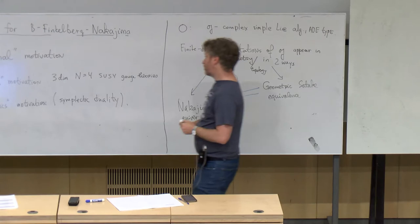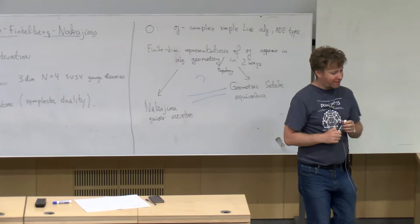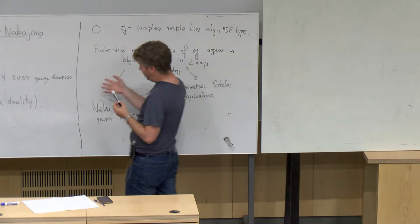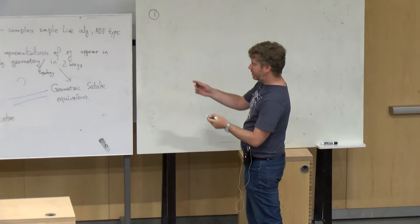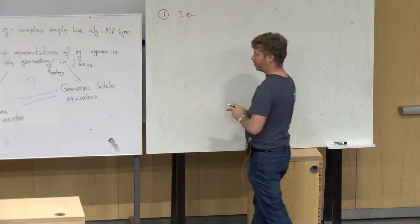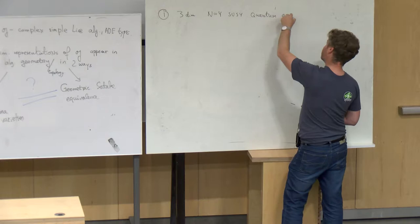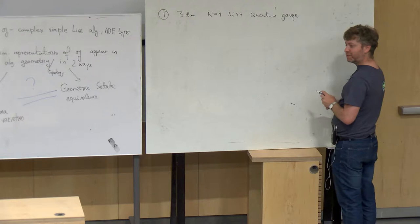Let me talk about the physics motivation. When we talk about physics motivation, we need to say some words which mean absolutely nothing mathematically, but they do provide some mathematical content in the end. Part one is supersymmetric gauge theory. This is a three-dimensional N=4 supersymmetric quantum gauge theory — an absolutely unclear object. Physicists study some realm of quantum field theories, and it's not clear what it means, but there are several things you can extract mathematically from what they say.